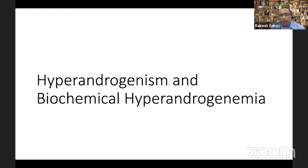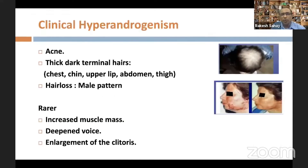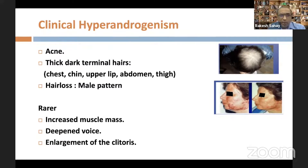Looking at hyperandrogenism — both the clinical aspects and biochemical hyperandrogenemia — clinical hyperandrogenism is typically characterized by the presence of thick, dark terminal hair on androgen-dependent areas of the body, male-pattern hair loss, and acne. Rarer manifestations can include virilization, which may manifest as increased muscle mass, deepening of voice, or clitoromegaly.